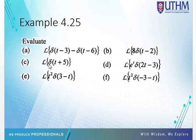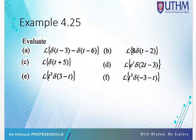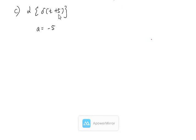Example c: the Laplace transform of delta(t + 5). Here delta(t + 5) means a equals negative 5. The Laplace transform definition integrates from 0 to infinity, so the value a equals negative 5 is not within the interval from 0 to infinity. Therefore the Laplace transform of delta(t + 5) equals 0.